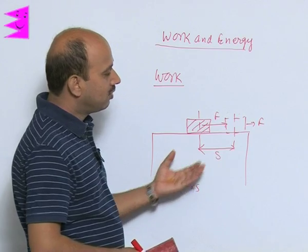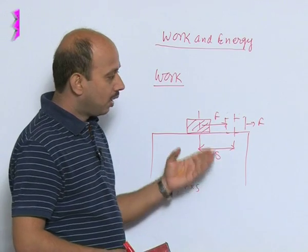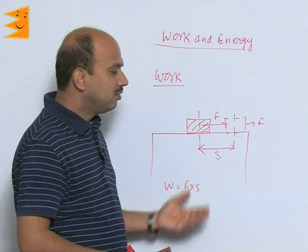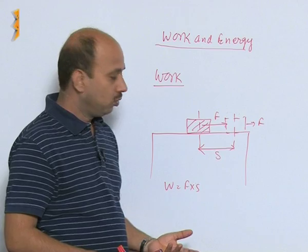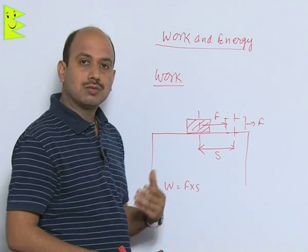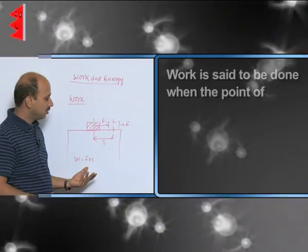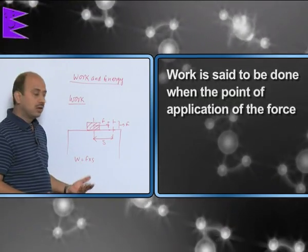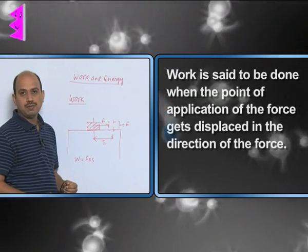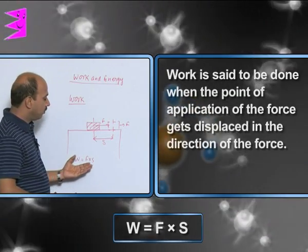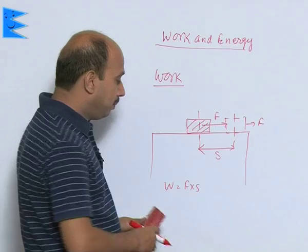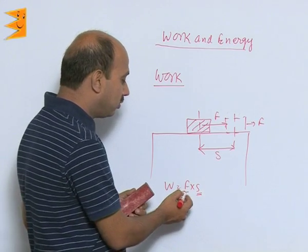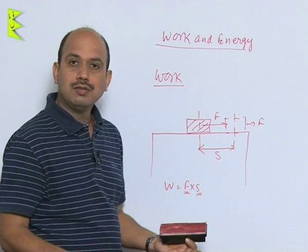Work is said to be done when the applied force displaces the body in its direction. Work is done when the point of application of the force gets displaced in the direction of the force. Work equals force into S. This means if displacement is zero, work done is zero. If the force is zero, work done is zero.